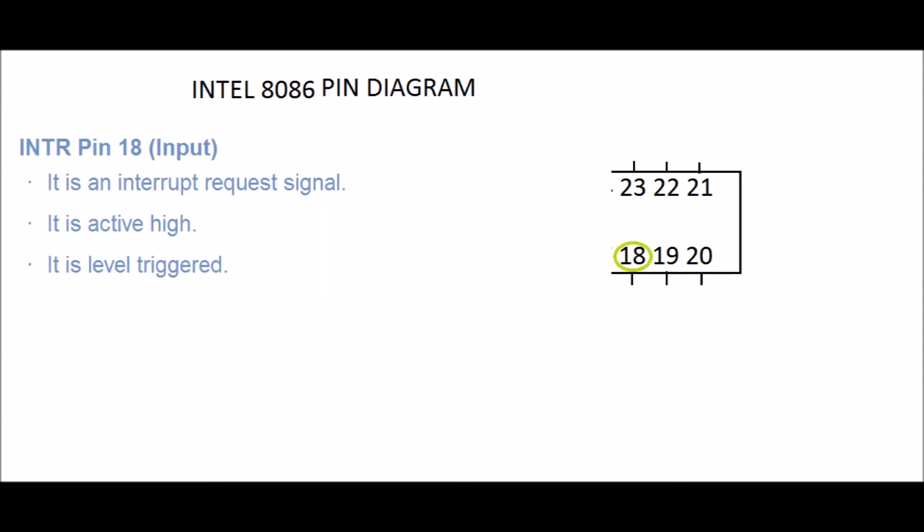INTR, PIN 18. We give input to this PIN. This is maskable type of interrupt. It is an interrupt request signal. It is software interrupt and can be disabled by software. Lower priority as compared to NMI. It is active high. It is level-triggered. These interrupts do not support latching and must remain high till the CPU acknowledges them to do so.